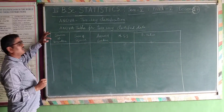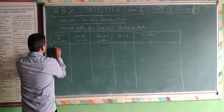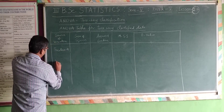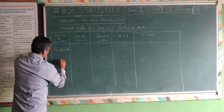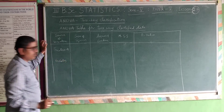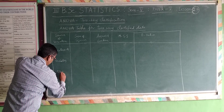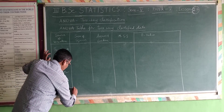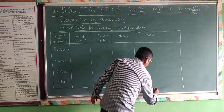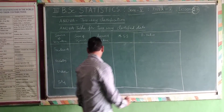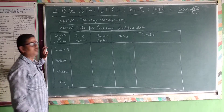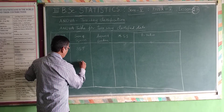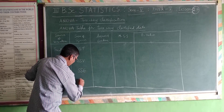In the source of variation column, there are mainly two sources: treatments and varieties. These are the two particular sources, and then error, and then total. For treatments, the sum of squares is SST. The sum of squares due to varieties is SSV. For error, it is SSE. And total is TSS.